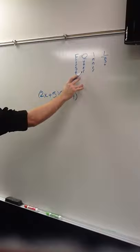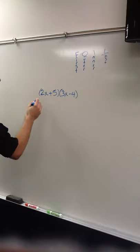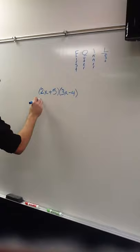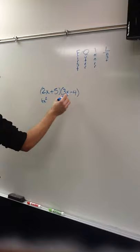So, for this problem, you have first is 2x and 3x, so you multiply those together and you get 6x squared. And then, outer, you get 2x and negative 4, so that's minus 8x.